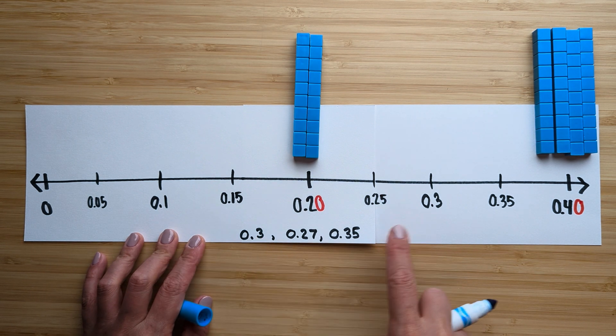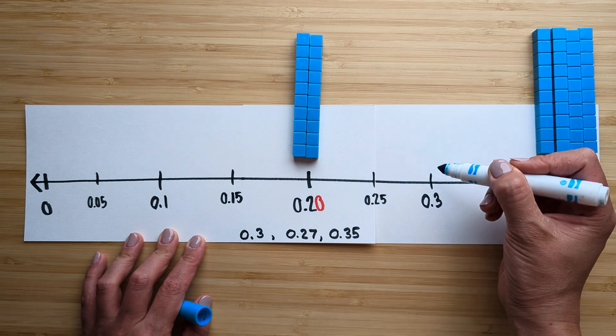three tenths. Okay, using the number line. That one's easy because it's right here, right? Three tenths. Be right here.